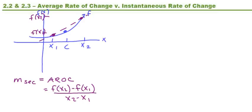So it's just the slope formula, like how we've known since algebra 1. So that's average rate of change.